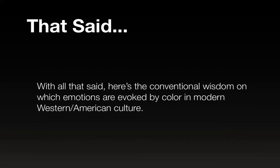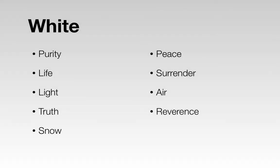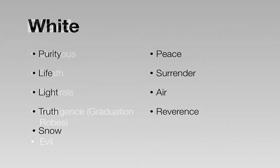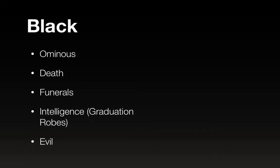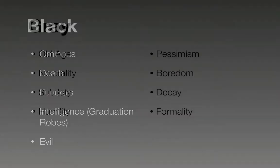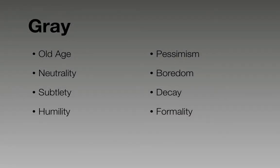With all that said, here's the conventional wisdom on which emotions are evoked by color in modern Western American culture. White is said to symbolize purity, life, truth, light, snow, peace, surrender, air, and reverence. Black equals ominous death, funerals, intelligence (in terms of graduation robes), and evil — also old age, neutrality, subtlety, humility, pessimism, boredom, decay, and formality.